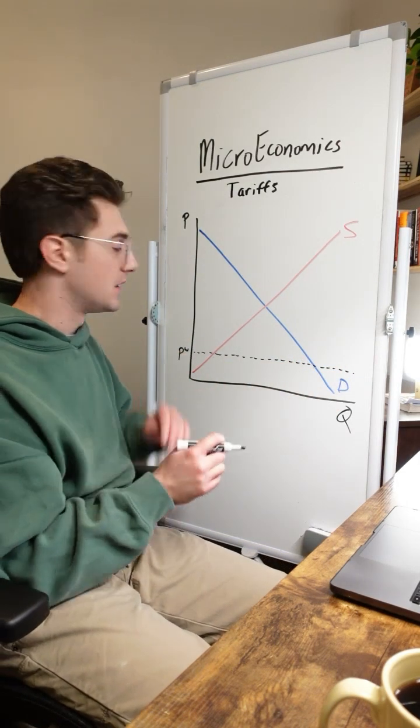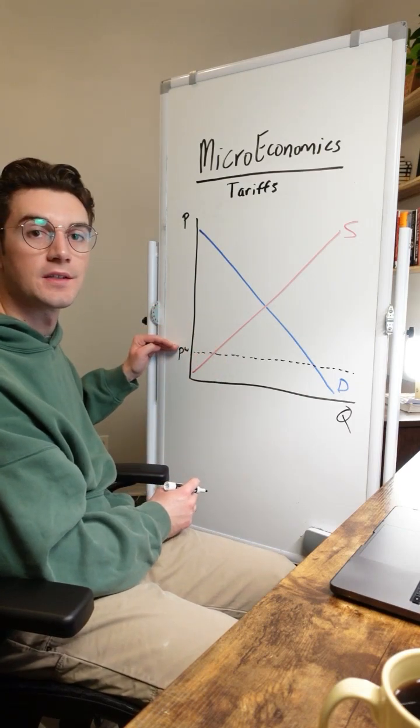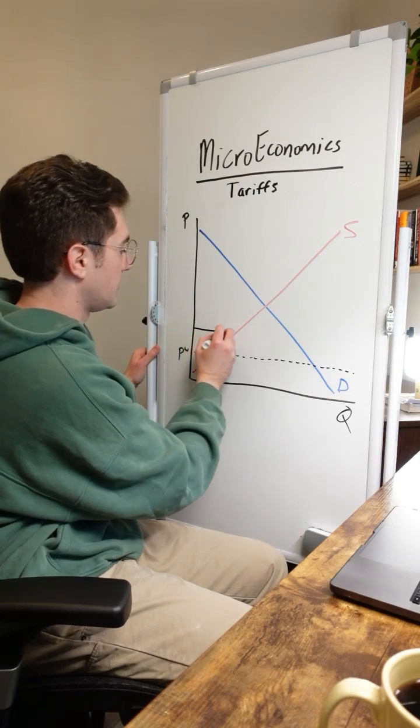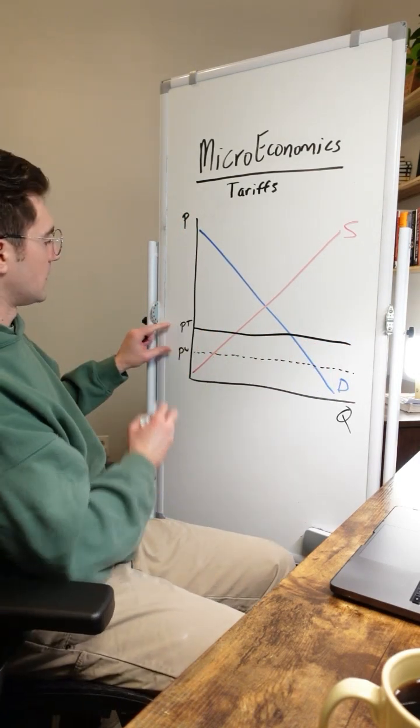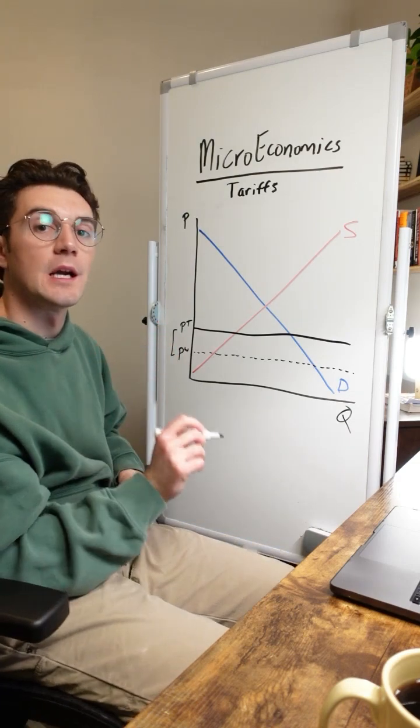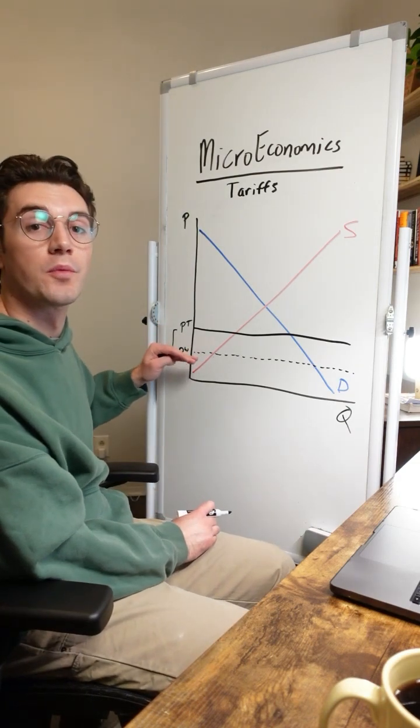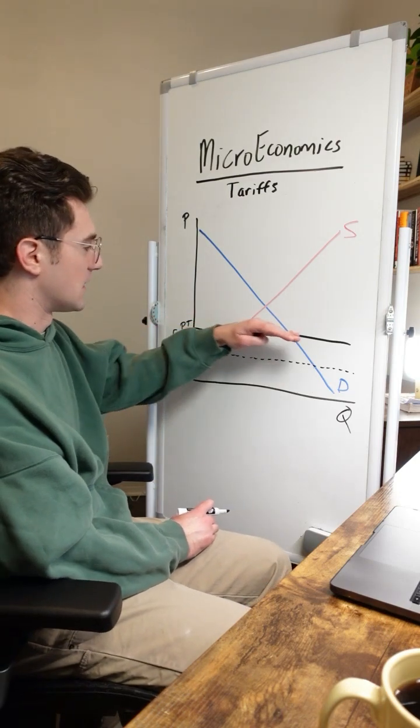What's going to happen is that the government is going to be adding some dollars to this world price, that being the tariff amount per unit. Let's imagine the government comes in and actually bumps up the price to this line right here. We'll call this PT. This vertical distance right here is the tariff amount per unit. The government's basically saying that you can still trade at the world price, but we're going to tack on this tariff and actually bring the price to this level.